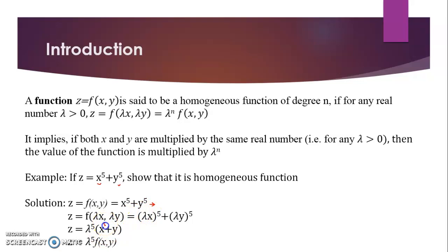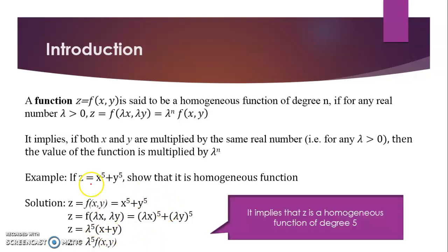So this is x⁵ and y⁵. This is our original function, that is x raised to power 5 plus y raised to power 5, and we have taken lambda raised to power 5 as common. So we say this function is a homogeneous function with degree 5. This is a homogeneous function where both variables have the same power.